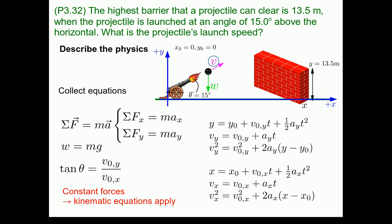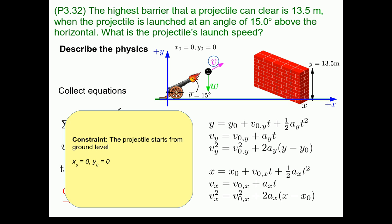You'll notice in your problem solving framework that it says at this point to start crossing out terms that are zero. The way to do this is to go back to your approximations and constraints. So let's do that. We have this constraint that the projectile starts from ground level, therefore x naught and y naught are zero. So let's cross those out. We also have the constraint that there are no forces, and therefore no acceleration in the x direction. So ax is going to be zero, too.